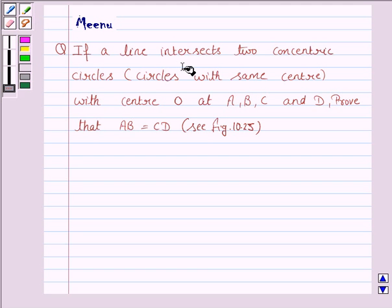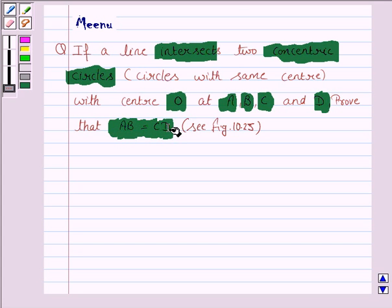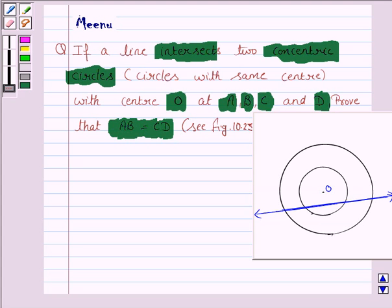If a line intersects two concentric circles (circles with same center) with center O at A, B, C and D, prove that AB is equal to CD. See figure 10.25 given in the book.